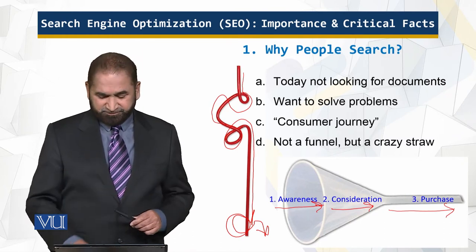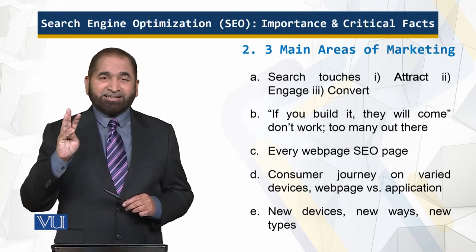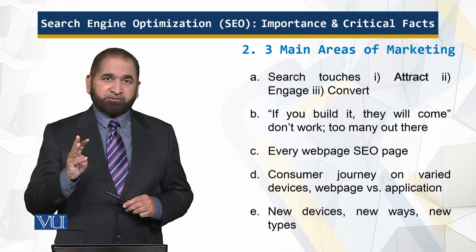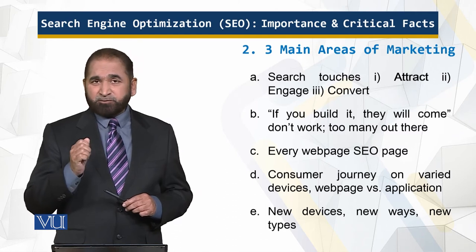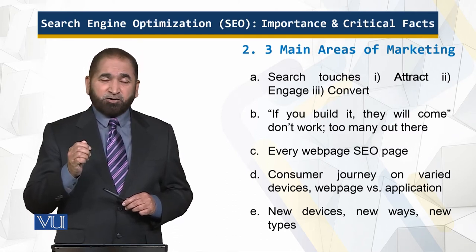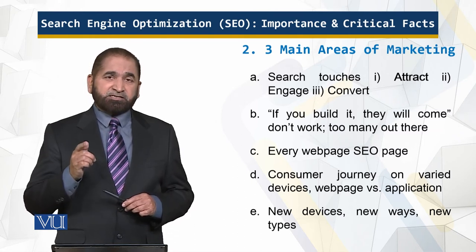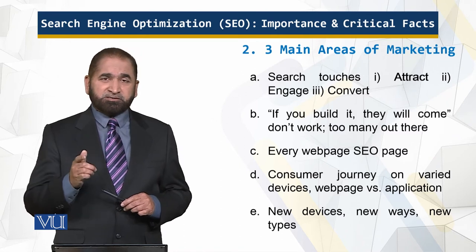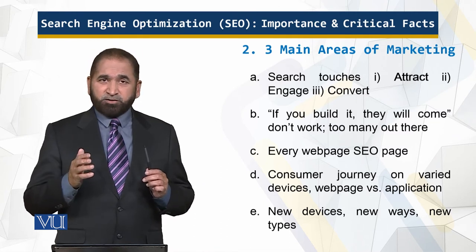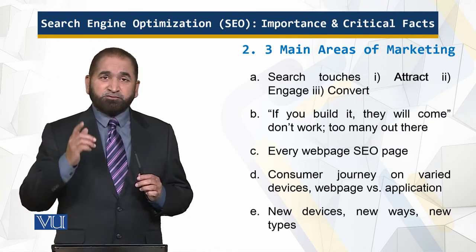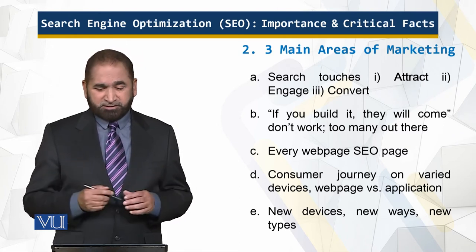The three main areas of marketing are attract, engage, and convert — and attraction is the most prominent feature of search. Remember: if you are online, you have to be search optimized. Whether you are a startup, an established business, a local business, small, medium, or large-scale — if people are looking for something that involves you, you should be on top of the list. That is what search engine optimization is about.